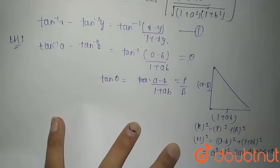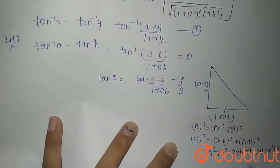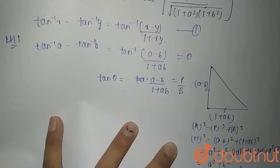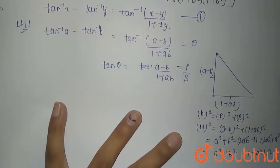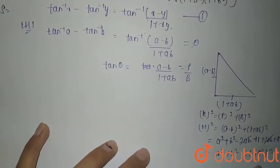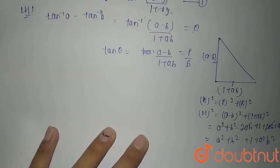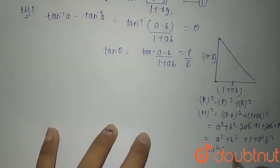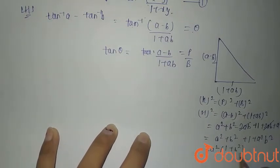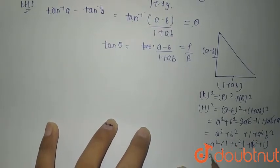The minus 2ab and plus 2ab cancel out. This simplifies to a squared plus b squared plus 1 plus a squared b squared. Taking a squared as common, we get a squared(1 plus b squared) plus (b squared plus 1), which factors to (1 plus a squared)(1 plus b squared).